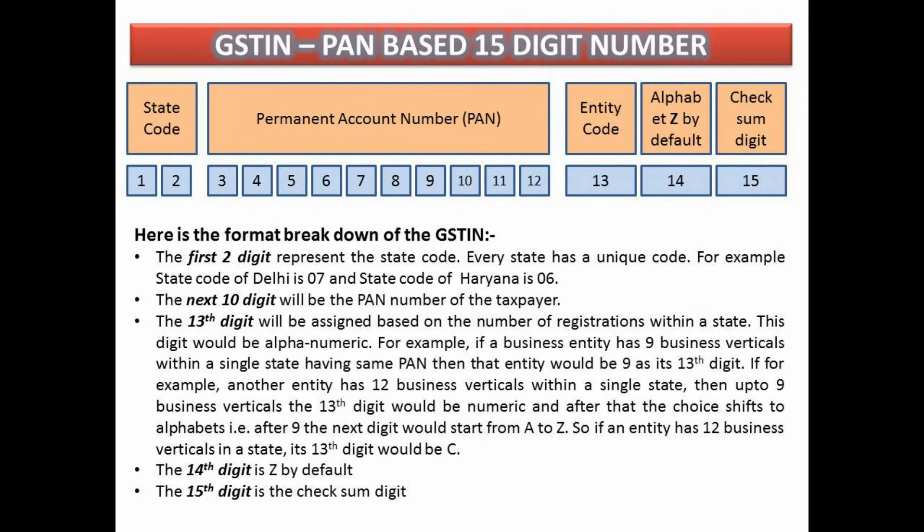The thirteenth digit is alphanumeric. For example, if an entity has 9 business verticals in a single state, the thirteenth digit would be 9. If another entity has 12 business verticals within a single state, up to 9 the digit is numeric, and after that the choice shifts to alphabets — that is, after 9, the next digit starts from A to Z. So, if an entity has 12 business verticals in a state, its thirteenth digit would be C. The fourteenth digit is Z by default. The fifteenth digit is the checksum digit.